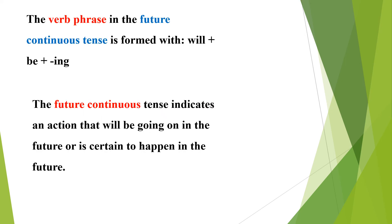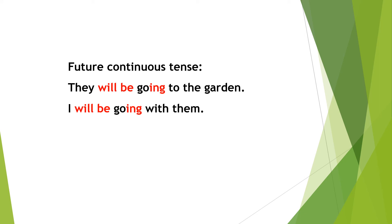The verb-phrase in the future continuous tense is formed with will plus be plus the ing form. The future continuous tense indicates an action that will be going on in the future or is certain to happen in the future. For example, they will be going to the garden. Here, 'will be' is the helping verb.